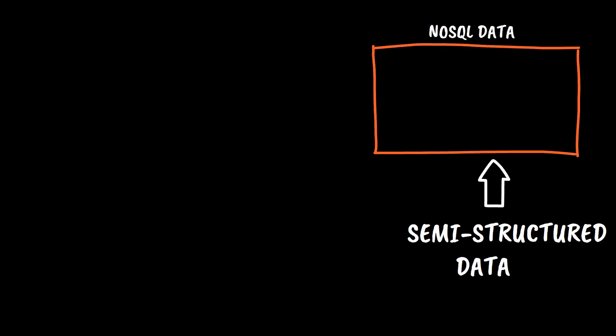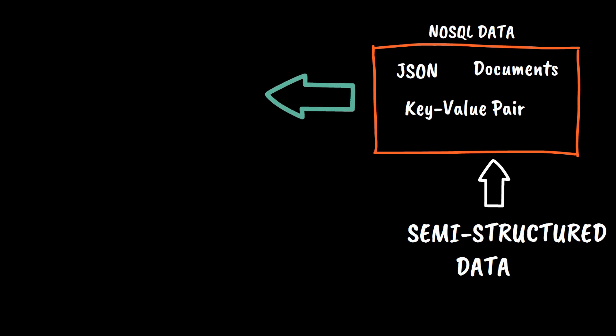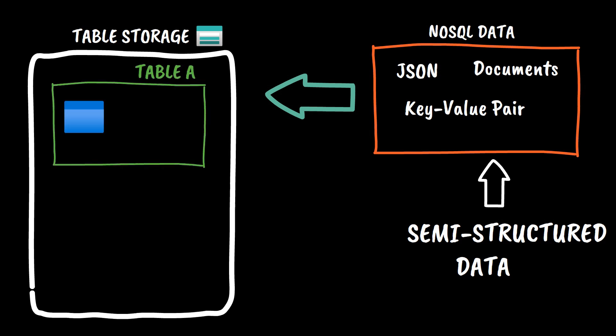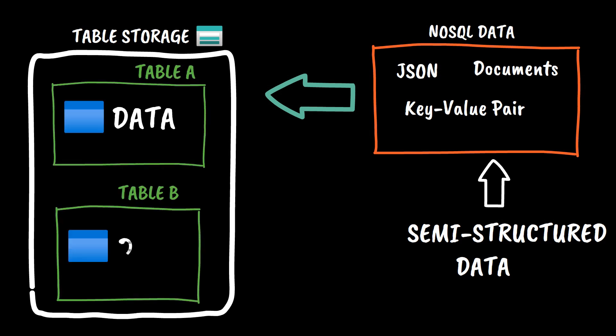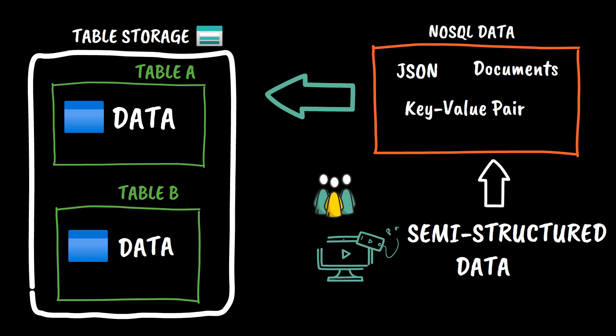You can store a massive amount of semi-structured data in Azure as well. Semi-structured data means NoSQL data that does not require a fixed schema, such as JSON files, document-based data, key-value pair-based data, and so on. As these files do not have a fixed schema and do not use SQL concepts such as foreign keys, joins, and relationships, data is uploaded to Azure Table inside a storage account for fast and secure access.